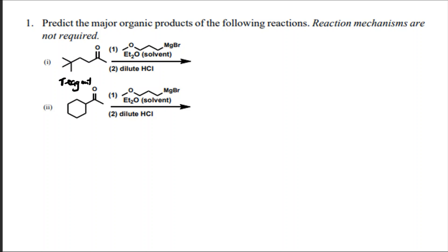This ketone is reacting with this reagent here. You can see this reagent has got a magnesium and bromide at the end — so this is a Grignard reagent. What is going to happen is that this carbon attached to the magnesium and bromine is going to join at the carbon of the ketone.